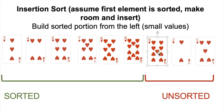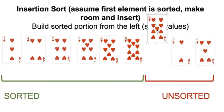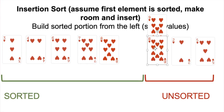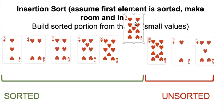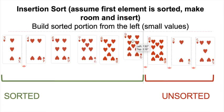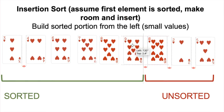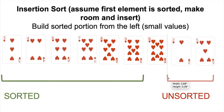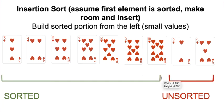Only a few more iterations left — three more cards to insert. Nine is the first element in our unsorted portion. Is nine smaller than ten? Yes — slide the ten over to make room. Is nine smaller than eight? No. So we insert nine between the eight and the ten. Our unsorted portion just shrunk by one and our sorted portion just grew by one.